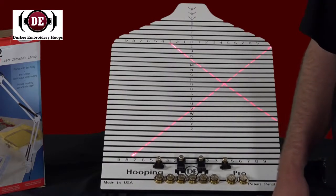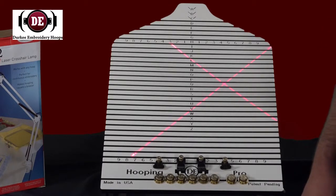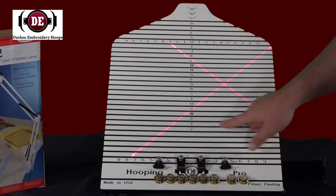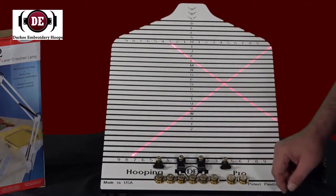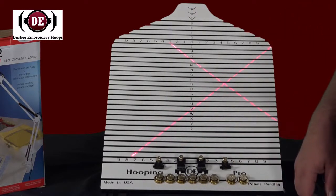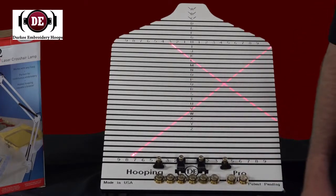Most hooping stations in the industry use a pegboard type system. The new Hooping Pro from Durkee is utilizing a slot system. What this does is gives you infinite adjustability for any size hoop and location that you choose to use.